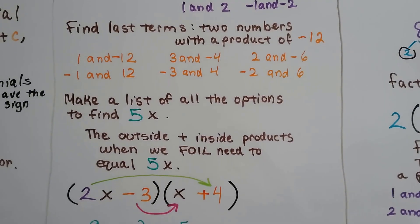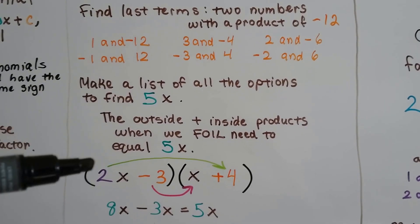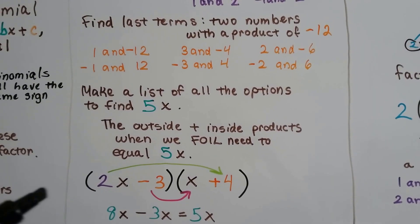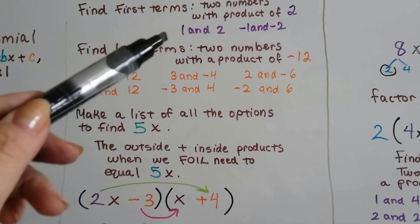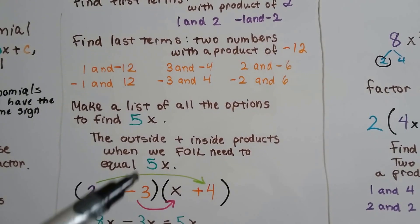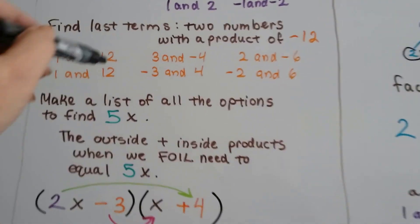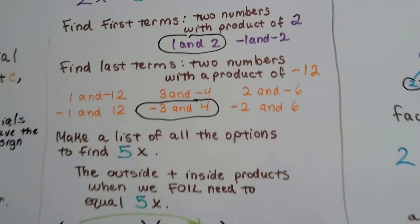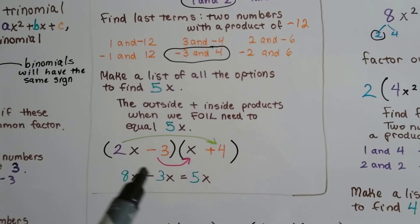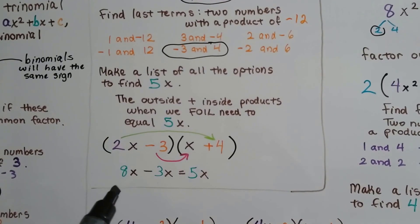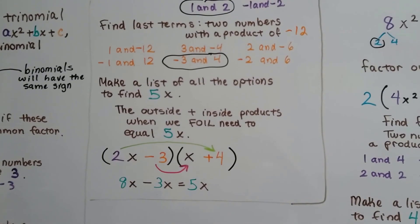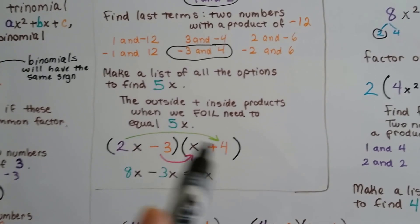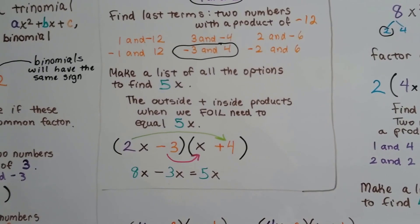We need to make a list of all options using positive 1 and 2 — and negative 1 and 2 — with each of those, to see which fits. That takes some scratch paper. The outside and inside products when we FOIL need to equal 5x. I ended up with positive 1 and 2 paired with negative 3 and positive 4, giving 8x minus 3x, which equals 5x. So those are our binomial factors.